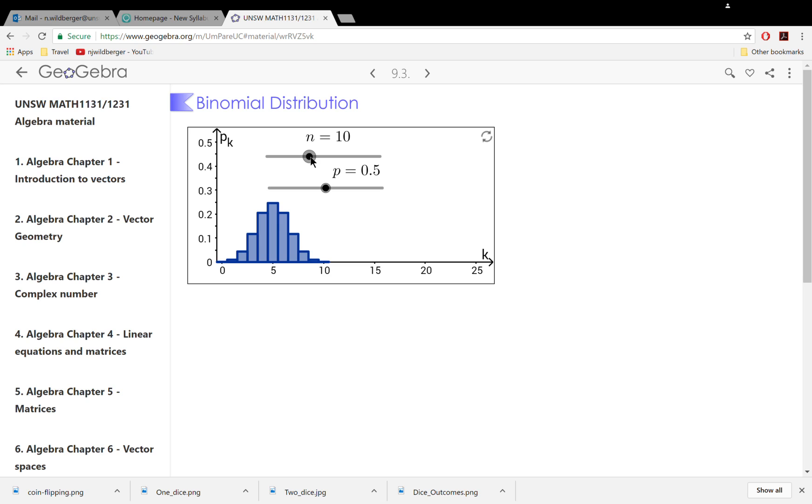These are sliders in GeoGebra. That means we can move them. If we move n, we can increase the number of tosses. Now we're tossing 16 coins. We see the probability distribution centered around about eight, as you might expect.